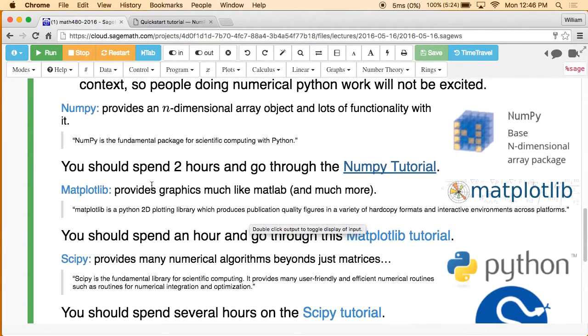Next is Matplotlib. There's a link to the website. Matplotlib is a 2D Python plotting library that produces publication quality figures and so on. For example, any time you draw a 2D plot in Sage, under the hood it constructs a Matplotlib figure and then draws that or renders that in some way.